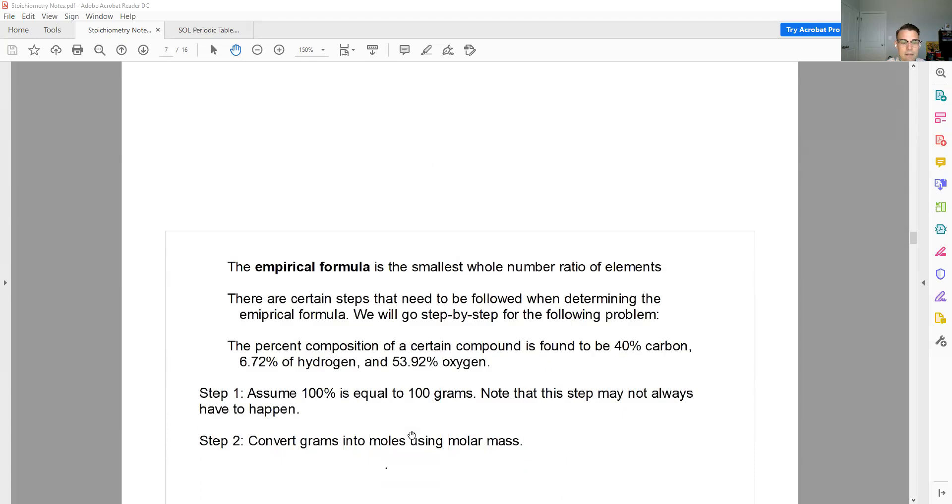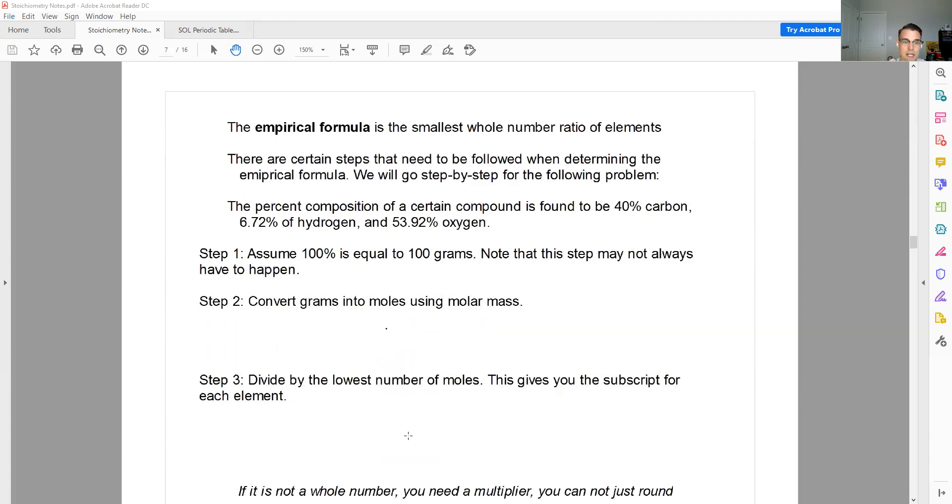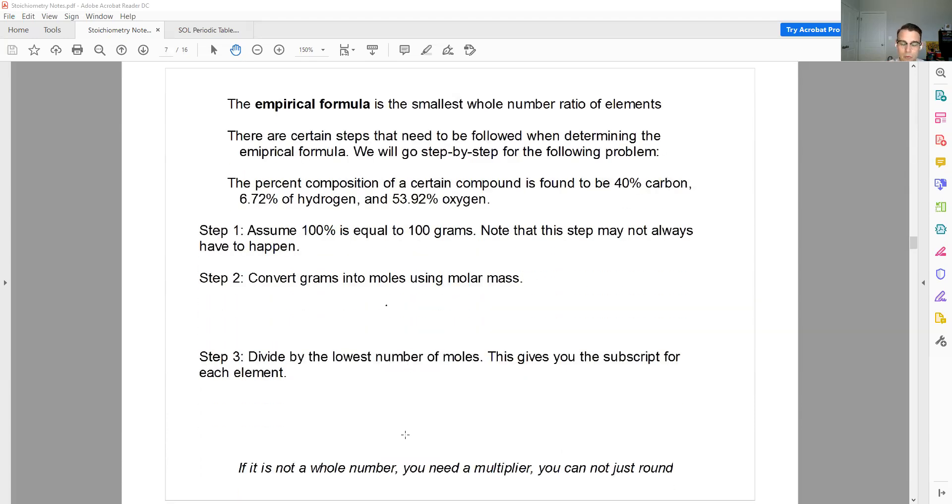The next one, I feel still simple. It just has more steps to it. So the empirical formula shows the smallest whole number ratio of elements in a compound. Like I said, there are certain steps that we are going to follow in order to determine the empirical formula. So here's the question. So we have a percent composition of a certain compound. It's found to be 40% carbon, 6.72% hydrogen, 53.92% oxygen.